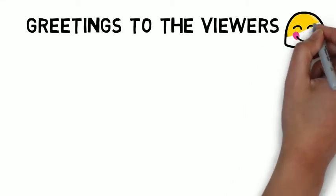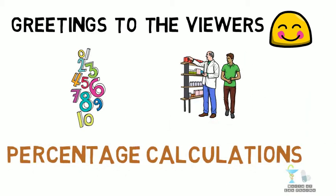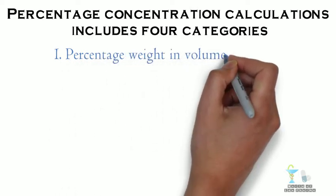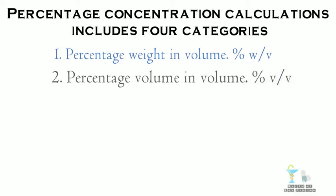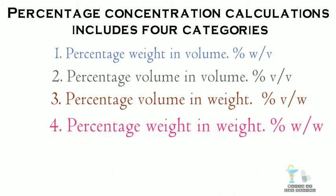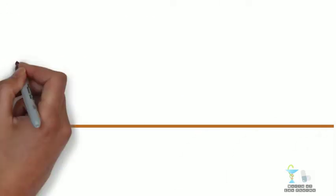Greetings to the viewers of this video. In the last two videos we have seen the calculations related to pharmacy. In this video we can see percentage calculations. Percentage concentration calculations includes four categories: percentage weight in volume, percentage volume in volume, percentage volume in weight, and percentage weight in weight. Volume refers to milliliters and weight refers to grams.